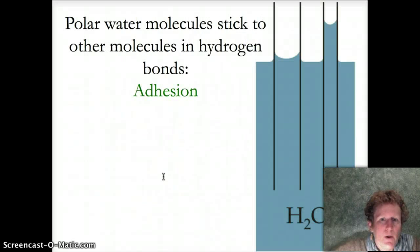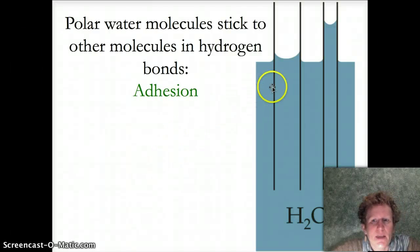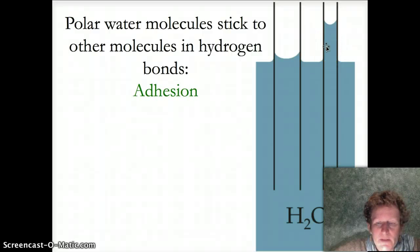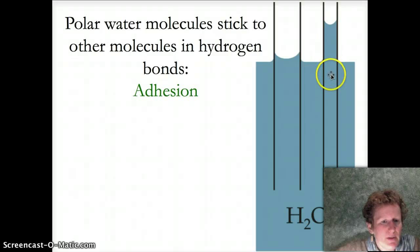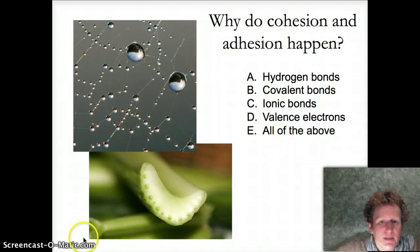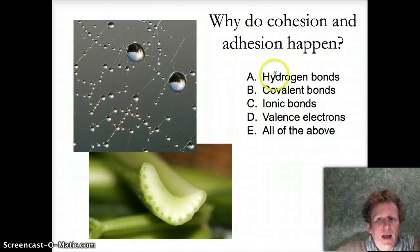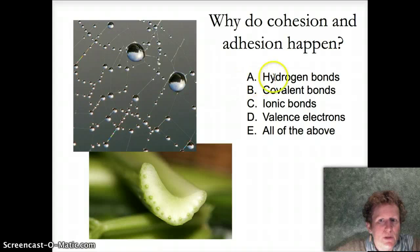Water exhibits cohesion and adhesion because of these polar bonds. Adhesion is where water molecules stick to other things — in this case, they stick to the small tubes inside plants, and this is called the capillary effect. Any small tube is called a capillary, and this happens very often in plants like celery. You can see these small tubes in celery. Cohesion and adhesion happen because of the hydrogen bonds in the water, which happen between the water molecules.